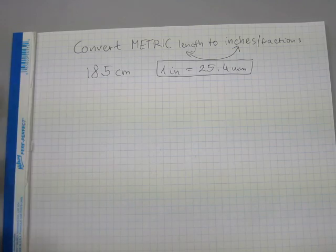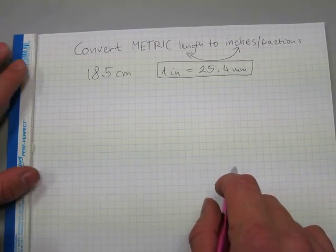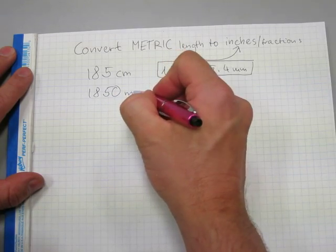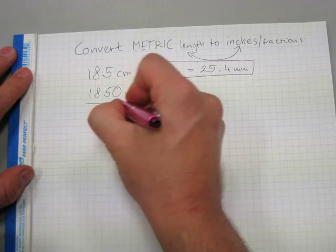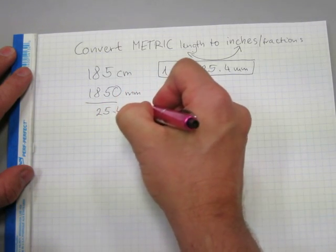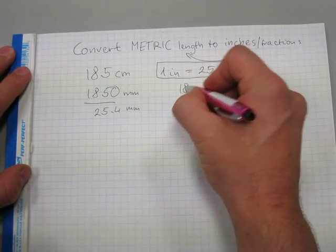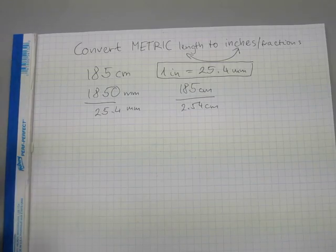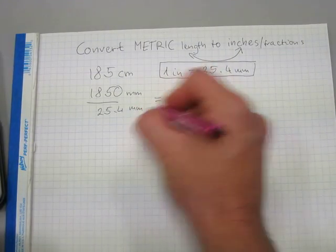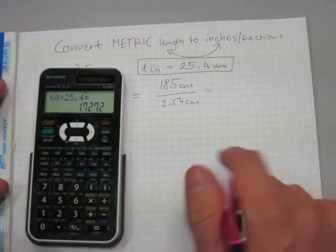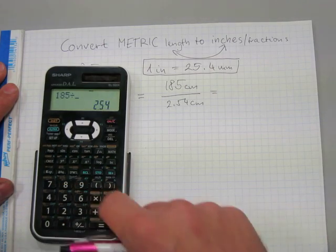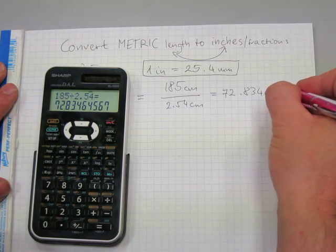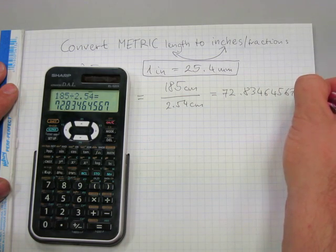So what do we do with this 185 centimeters? We can do either 185 centimeters is 1850 millimeters and it gets divided by 25.4 millimeters, or we can do 185 centimeters and divide it by 2.54 centimeters. Either way it's going to be the same. Let's do 185 divided by 2.54 equals 72.83464567 inches.